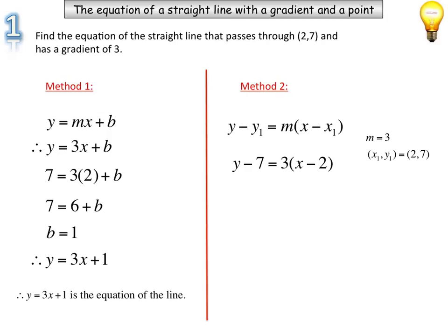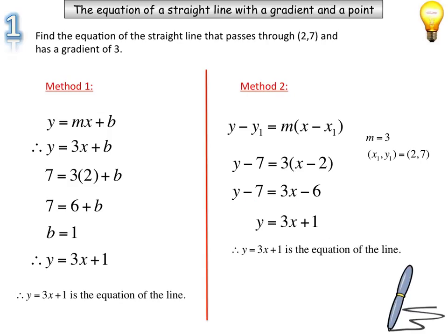I can now expand the brackets and then add the 7 to that side to get it in the form as what we had in the previous method. So you've got two methods to calculate the equation of a straight line. The first one is from your gradient intercept form and the other one is from our new equation, the y minus y1 equals m x minus x1.